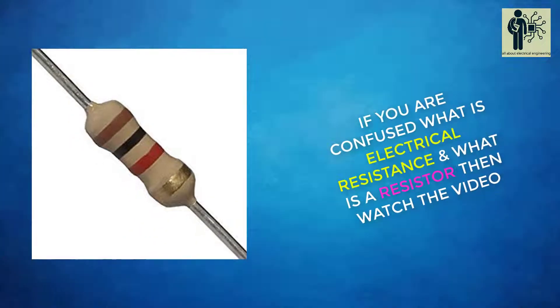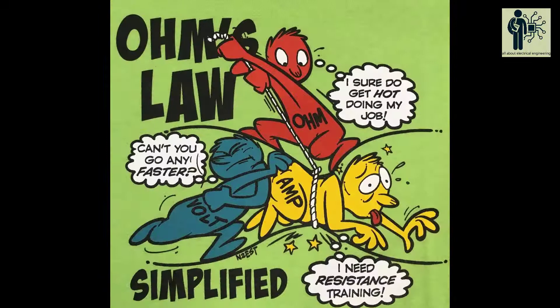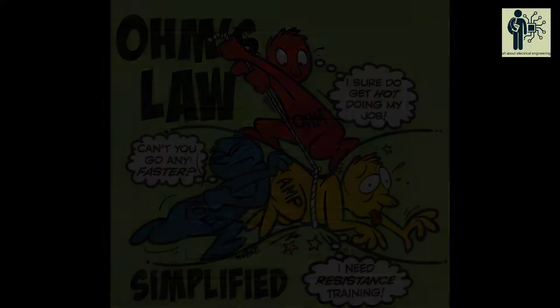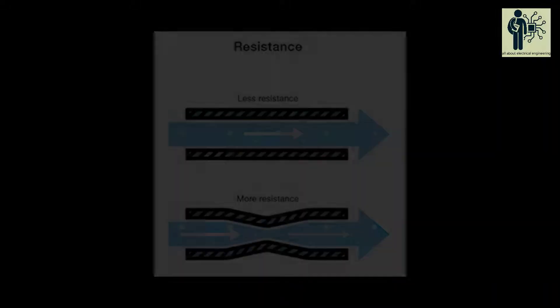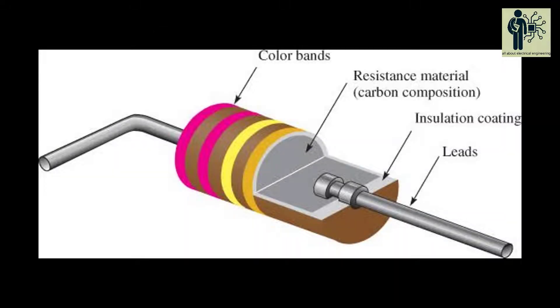If you are confused what is electrical resistance and what is a resistor, then watch the video. The opposition offered by a substance to the flow of electric current is called its resistance. The device which resists the current flow is called a resistor.